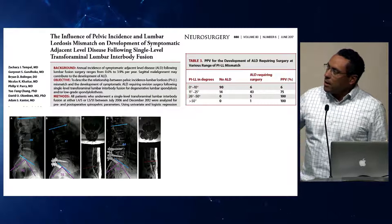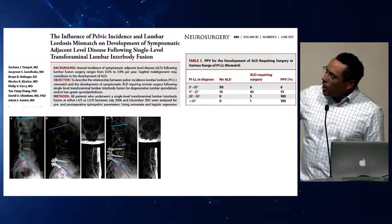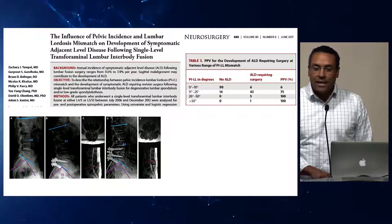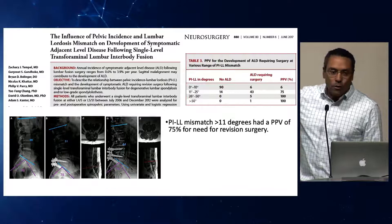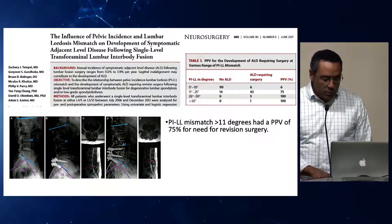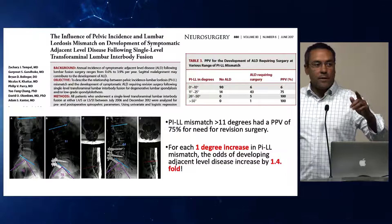This has implications outside of the deformity world. If you take a one-level TLIF and your PIL mismatch is mismatched after that one-level TLIF, you have a vastly higher rate of adjacent segment degeneration and need for adjacent segment surgery. When we looked at our own practice, 75% of patients with a PIL mismatch greater than 11 degrees after a one-level TLIF ended up needing a revision operation. For each degree increase, the odds of developing adjacent level disease increased by 1.4-fold.